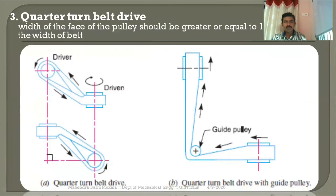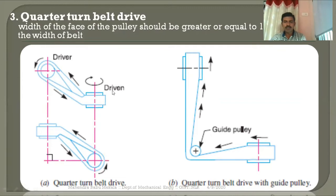The third type is the quarter turn belt drive. When the driving and driven shafts — the line shaft and machine shaft — are at right angles, that is perpendicular to each other, a quarter turn belt drive is used. The classification of these belt drives is based on shaft orientation: open belt drive, cross belt drive, and quarter turn belt drive.